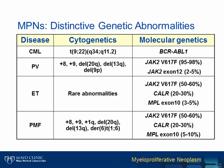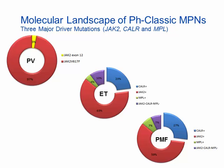With years of research, distinctive genetic abnormalities have been identified in the myeloproliferative neoplasms, and the molecular genetic landscape has evolved significantly during the past decade. Here is the major molecular landscape of the three BCR-ABL negative classical MPNs — PV, ET, and PMF. Three major driver mutations have been identified in these disorders, and importantly, they are essentially mutually exclusive of each other. These are JAK2, CALR, and MPL mutations.